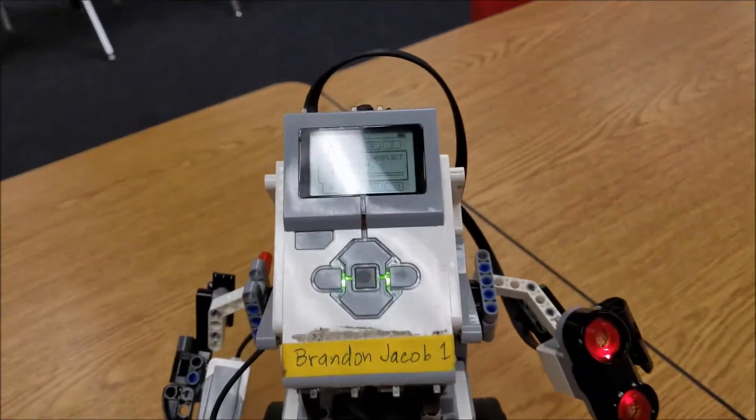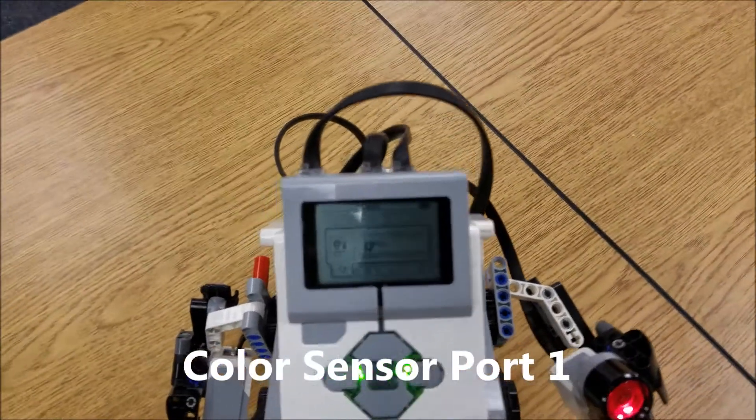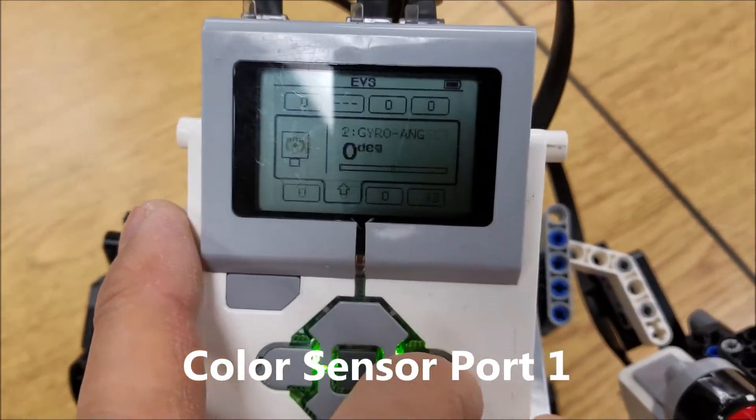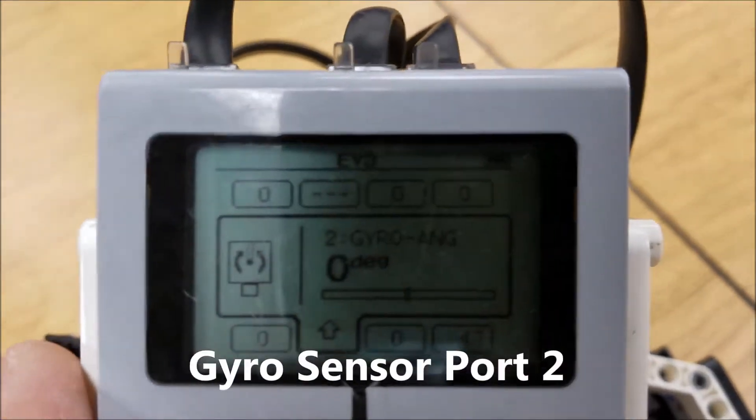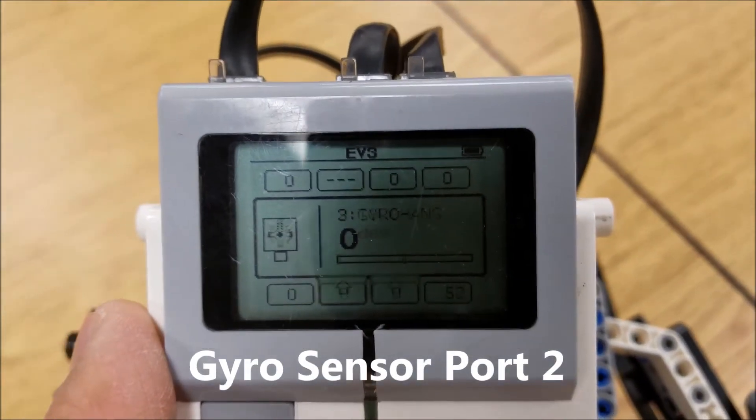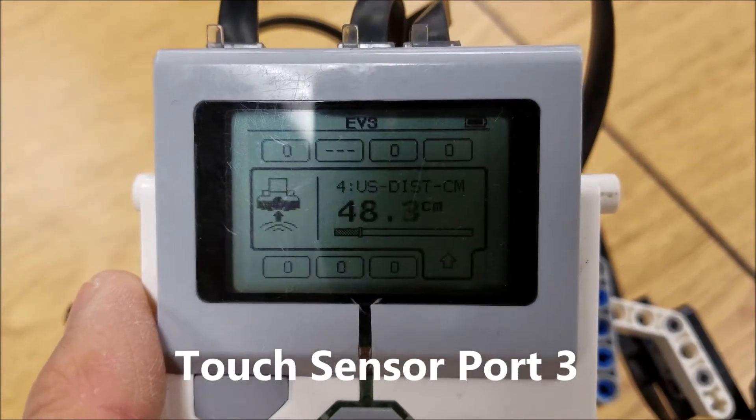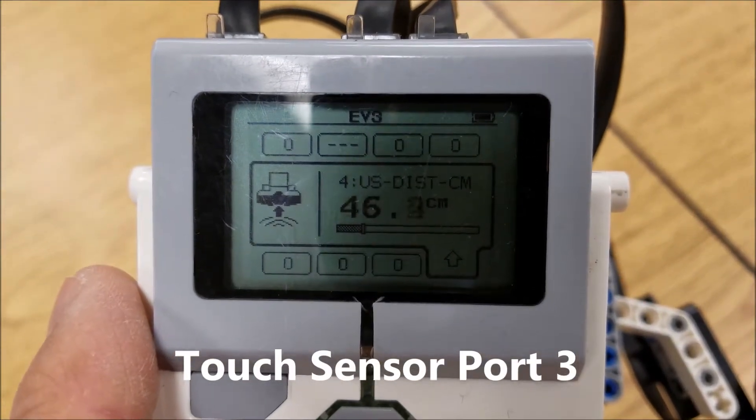So let's go ahead and go to port view and we can just check out that you have everything in the right spot. Sorry about the glare. Let me come up here. Okay. So number one, you have your color sensor. Port two, you have your gyro sensor. Port three,